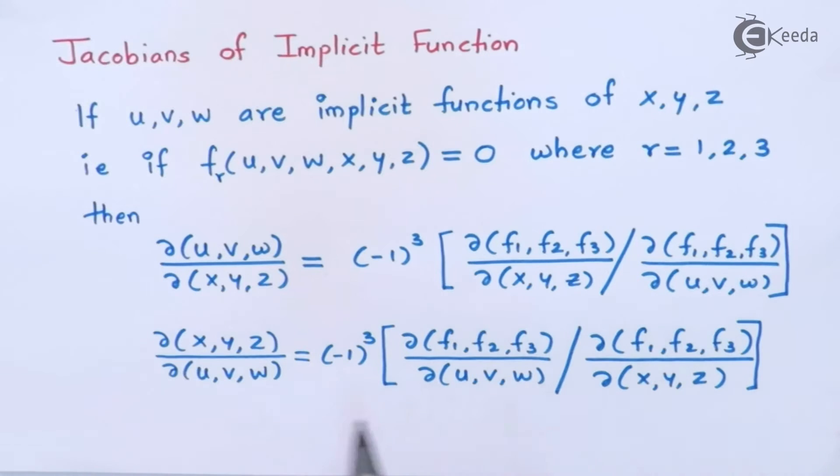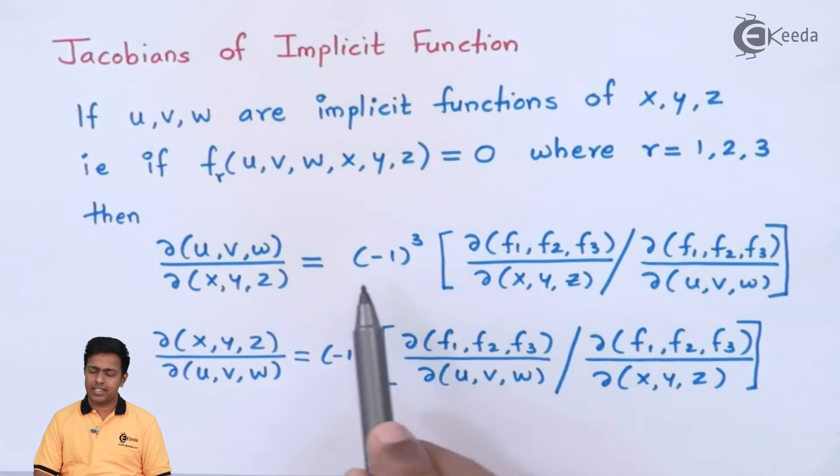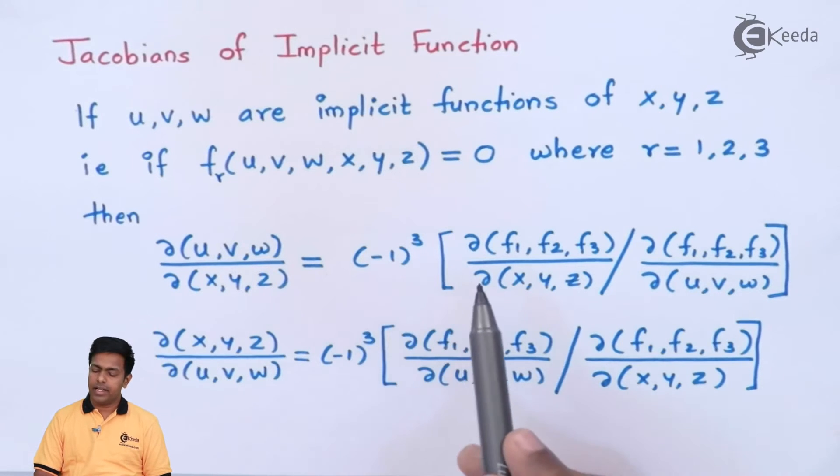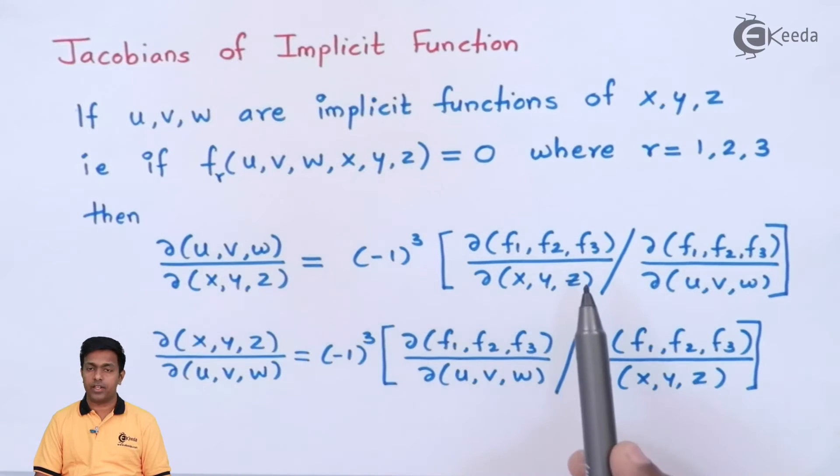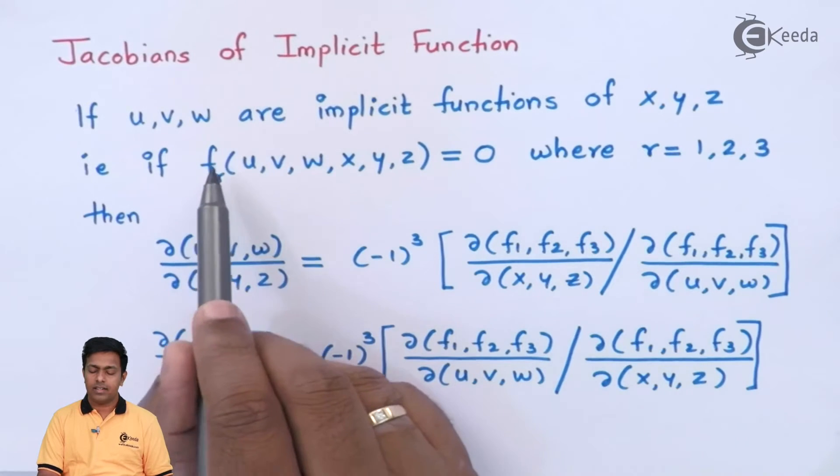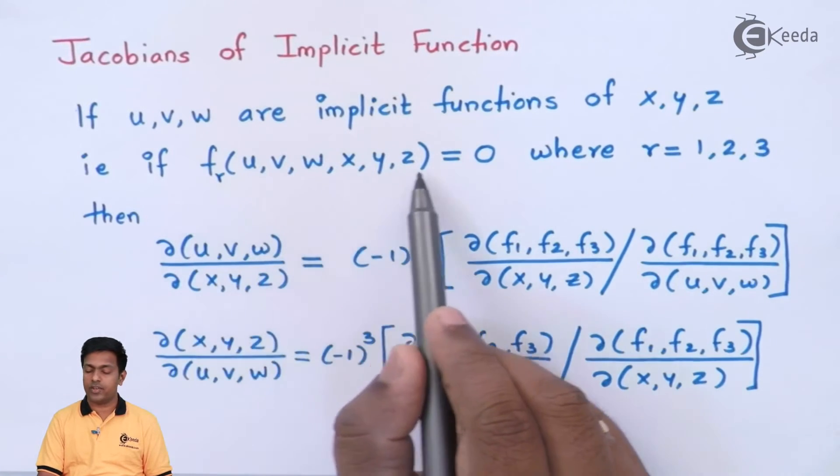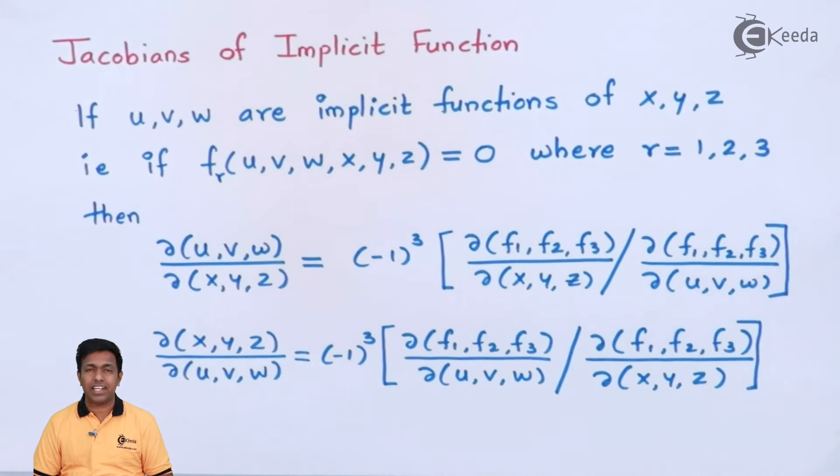So whenever we want to find out the Jacobian of u, v, w with respect to x, y, z, then the formula is minus 1 raised to 3, so we can say it is negative itself. Then here we will differentiate these three functions f1, f2, f3. Now how we will get the f1, f2, f3? Here I have said that it is f_r(u, v, w, x, y, z) where r is 1, 2, 3. So we will be having three functions in the given question.